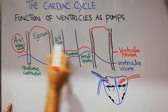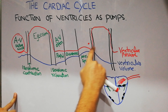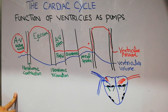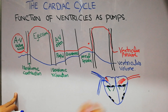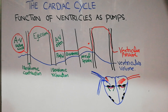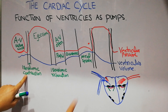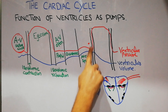The AV valves close because tension in the ventricle starts increasing. The red graph shows the pressure in the right ventricle rising. No blood is going out of the ventricle, but the pressure starts increasing, causing closure of the valves. The amount of blood in the ventricles remains the same — this is known as isovolumic contraction, meaning the volume is constant while contraction and pressure are increasing.